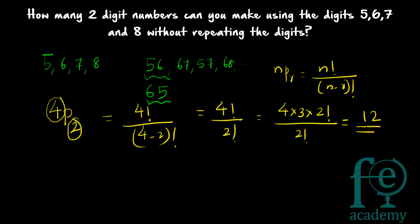Suppose the question was to make four-digit numbers using all four digits five, six, seven, and eight - then what would your answer be? The number of ways in which n objects can be arranged is given by n factorial. So the answer would be 4P4, which equals four factorial. There would be four factorial four-digit numbers possible when using all four digits five, six, seven, and eight.